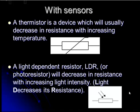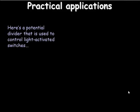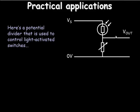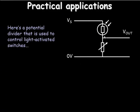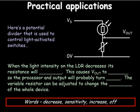Now, with these sensors integrated, we can do some interesting things. Here's a practical application we can talk through. So this is a potential divider that uses to control light-activated switches. So here what I've got is I've got a variable resistor, and I've got a light-dependent resistor, as you can see. Now, with these in place, it means the amount of light is going to have an impact on the voltage out. Let's see. Again, I'm going to pause for a moment. Press the pause button. See if you can work out the solutions to these sentences.